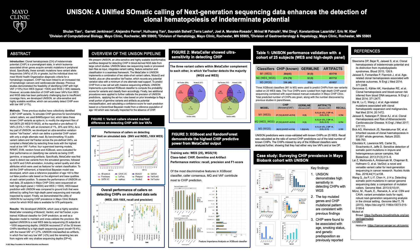Finally, to demonstrate the utility of this bioinformatic workflow, we applied it to the Mayo Clinic Biobank cohort of roughly 1,000 subjects with whole genome sequencing available. UNISON demonstrated high sensitivity in detecting CHIP using whole exome sequencing data through implementing the ensemble caller. The top mutated genes and CHIP mutation patterns were very consistent with previous findings, and statistical analysis confirmed CHIP associations with age, smoking status, and germline mutations — all of which had been previously reported.